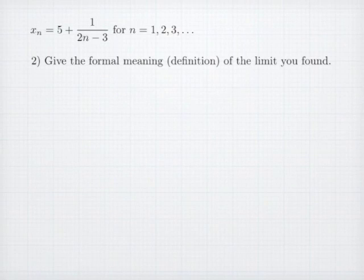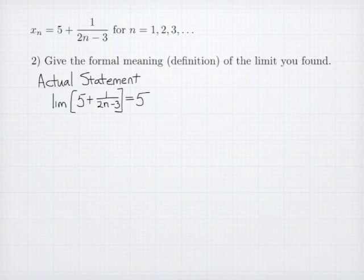The second typical question is being able to recall the actual definition of what the limit means. So first, let's review what was the limit statement. The actual statement that we're trying to show is to say that our sequence 5 plus 1 over 2n-3 has a limit of 5, which we write the limit of that sequence formula equals 5. That's what we're trying to state what it means.